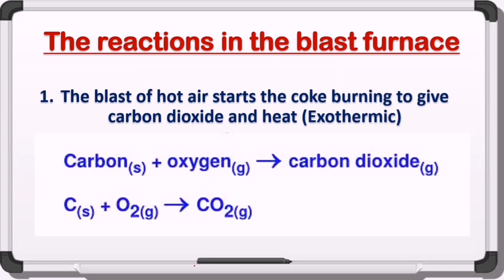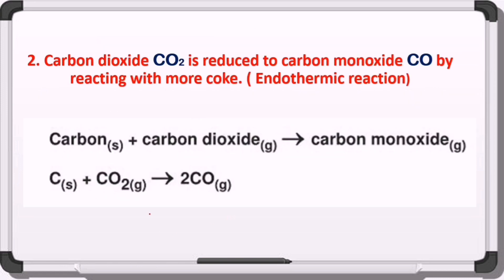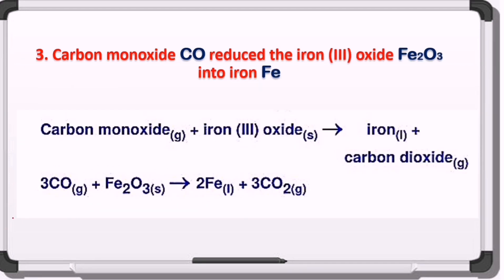Now we can check the reactions one by one. Step one: the blast of hot air causes coke to combust, producing carbon dioxide and heat — this reaction is exothermic. The equation is: C + O₂ → CO₂. Step two: carbon dioxide reacts again with coke — carbon — to produce carbon monoxide, which is used as a reducing agent. Step three: carbon monoxide, the reducing agent, reduces hematite Fe₂O₃ to produce molten iron plus carbon dioxide.